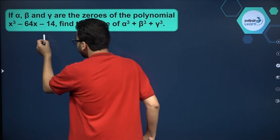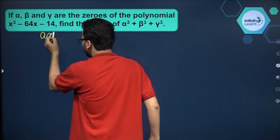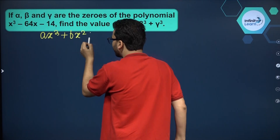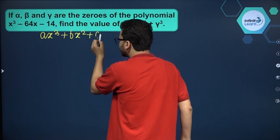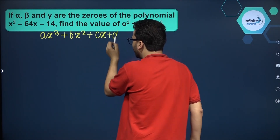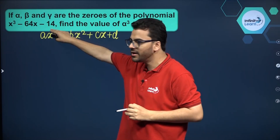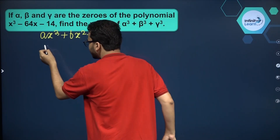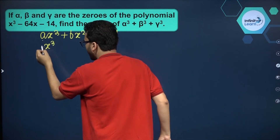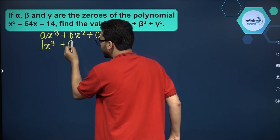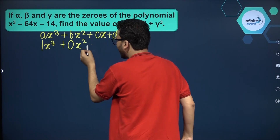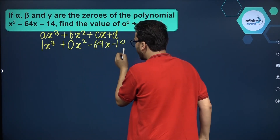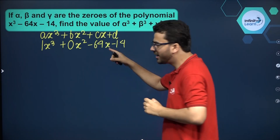The standard form of a cubic polynomial is ax³ + bx² + cx + d. Now if I want to write the given cubic polynomial in standard form, I can say this is x³ — that is 1·x³ — plus 0·x² minus 64x minus 14.